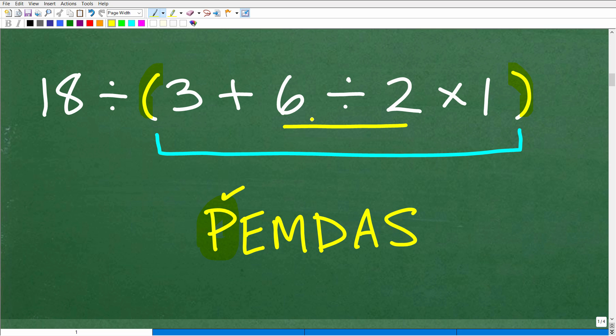The E is, of course, powers. So we're going to look inside. Do we see any powers? No. So now we're going to consider multiplication and division. Do we see any multiplication and division? Yes. We see multiplication here and division here. Division comes before multiplication, so that's what we're going to do. We're going to do this first.